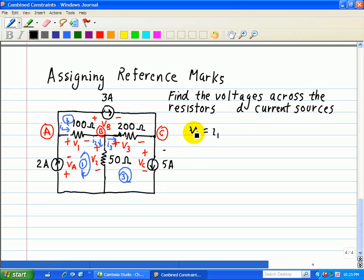So here we have V1 equals I1 times 100 ohms, we have V2 is equal to the 50 ohm resistor times I2, and we have V3 is equal to I3 times the 200 ohms, so 200 times I3.